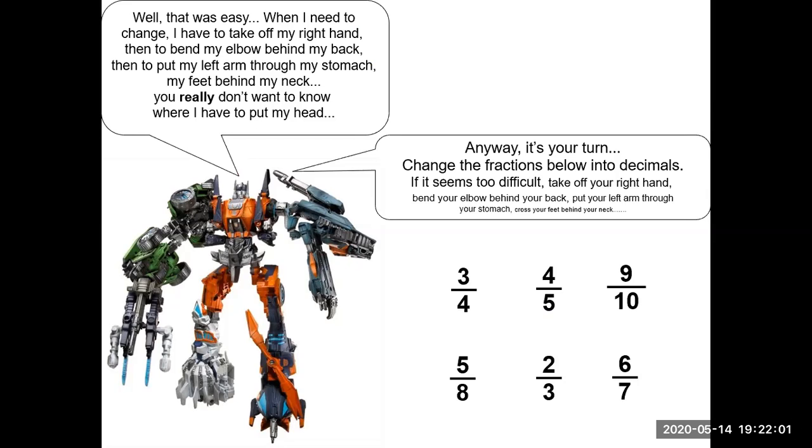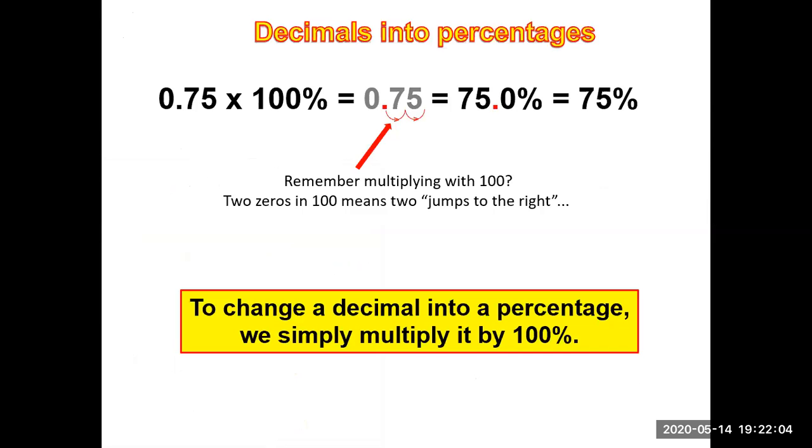Decimals into percentages: 0.75 multiplied by 100% equals 75%. The decimal will just move places - it will move to the right two places. Remember, multiplying with 100 - two zeros in 100 means two jumps to the right. To change a decimal into a percentage, we simply multiply it by 100.